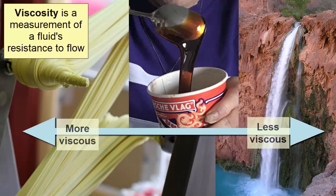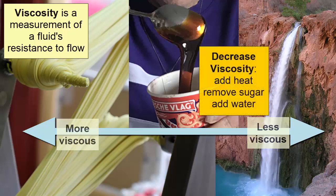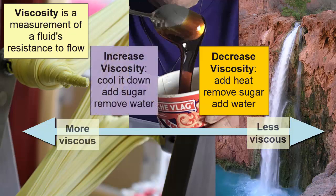How can we make syrup less viscous, more runny? Heat it up, remove sugar from it, or add water. To make it thicker or more viscous, we do the opposite: cool it, add more sugar, or remove water.